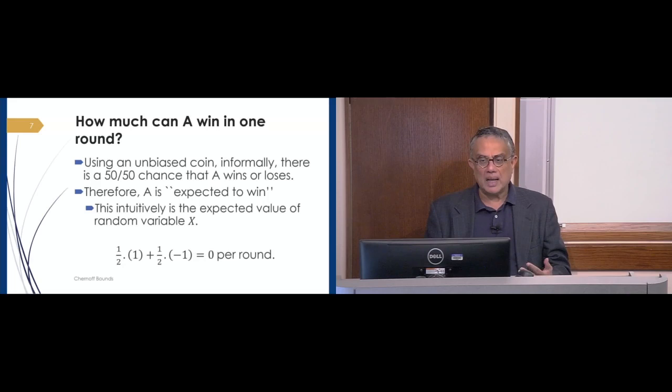So using an unbiased coin informally, there's a 50-50 chance that A wins or A loses. Therefore, A is expected to win some amount, and that is the expected value, which is the probability of an event happening and winning one, or probability of the second event happening and losing one, which is minus one. So in this case, the expected gain is zero.